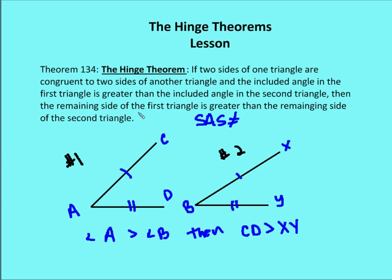...then the remaining side of the first triangle, which would be CD, is going to be greater than the remaining side of the second triangle. So the hinge theorem says that if angle A is greater than angle B, then CD is going to be longer than XY. That's the hinge theorem.